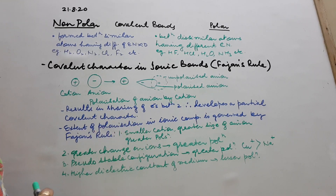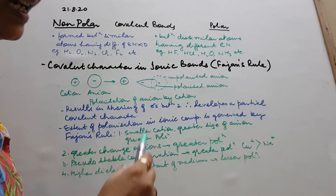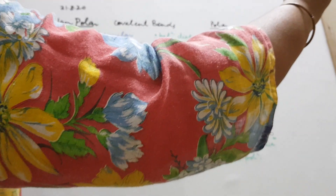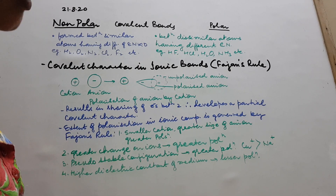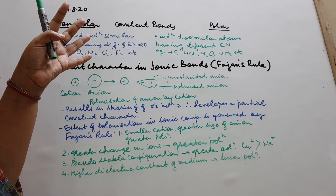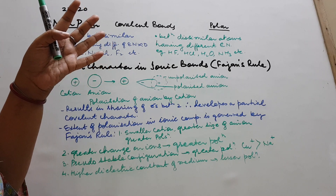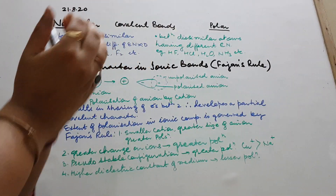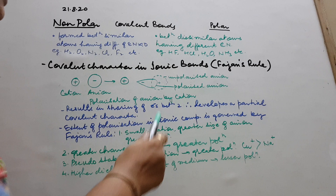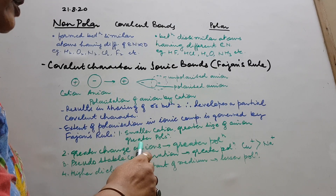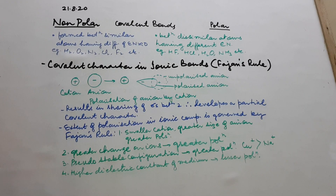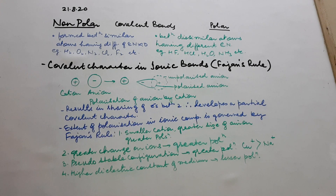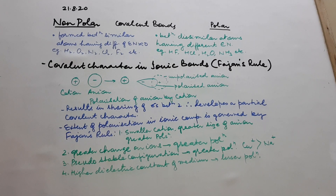Number two: greater charge on ions — whether cation or anion — if they have greater charge, greater will be the polarization. The tendency of the cation to polarize the anion is called the polarizing power of the cation, and the tendency of the anion to get polarized is called the polarizability of the anion. These terms may not be in your book, but they are important.